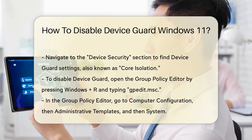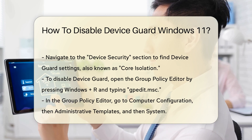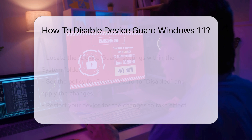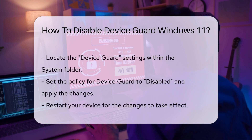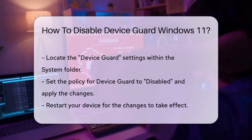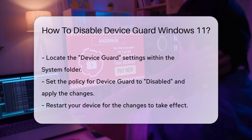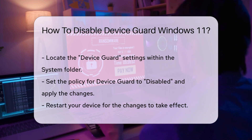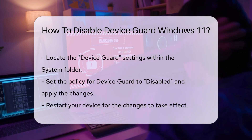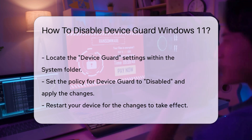Navigate to Computer Configuration, then to Administrative Templates, and finally to System. Within the System folder, locate the Device Guard settings. You will find options related to enabling or disabling Device Guard.